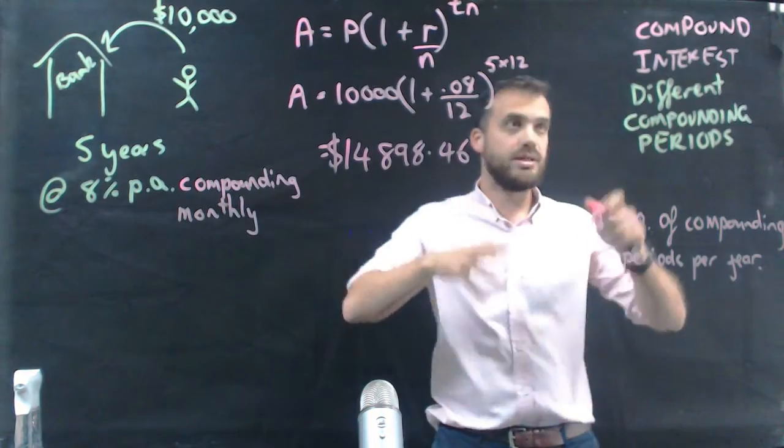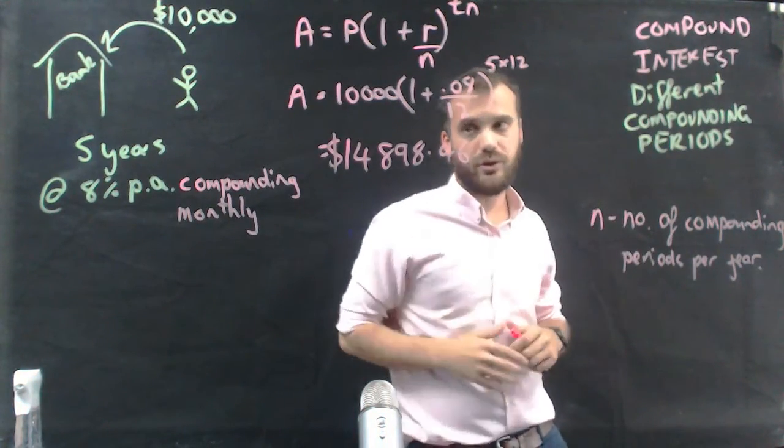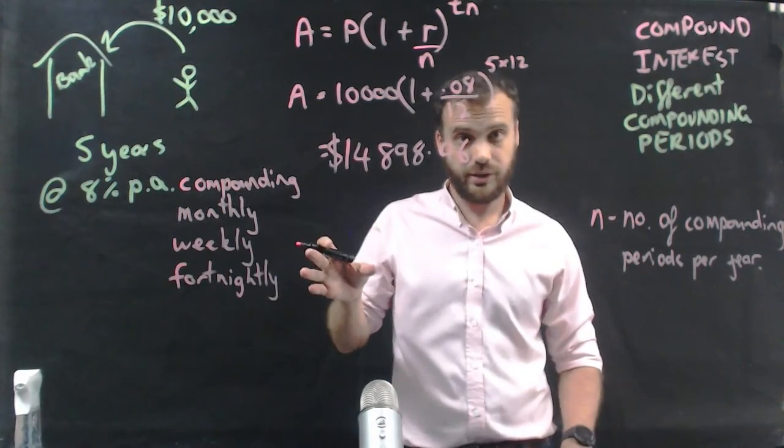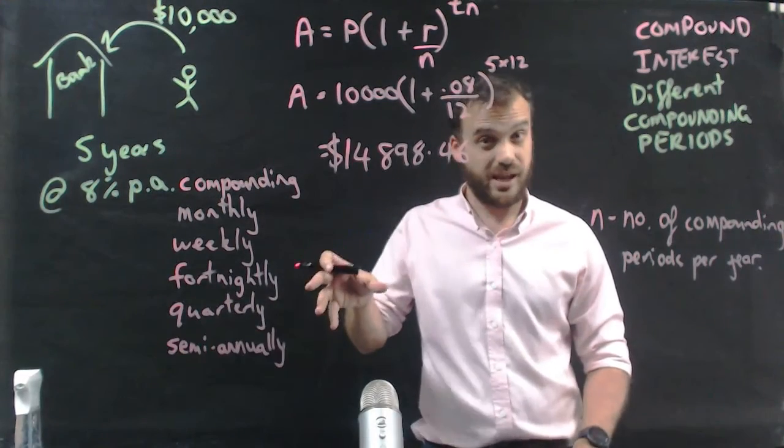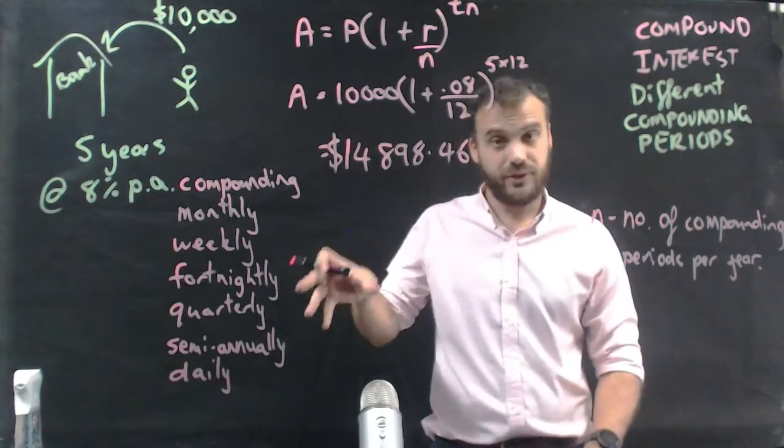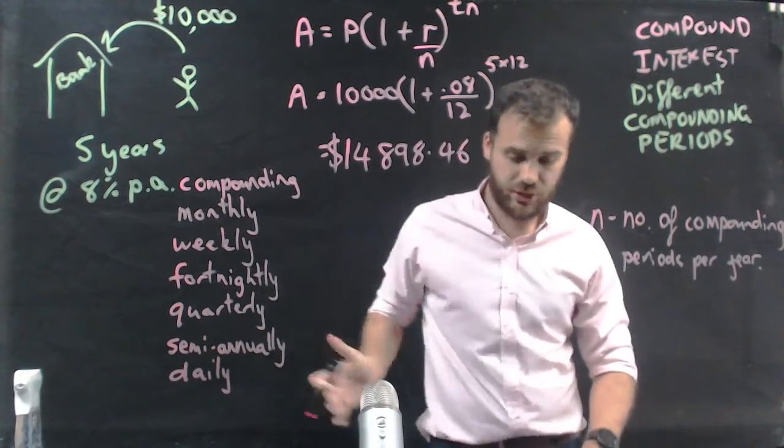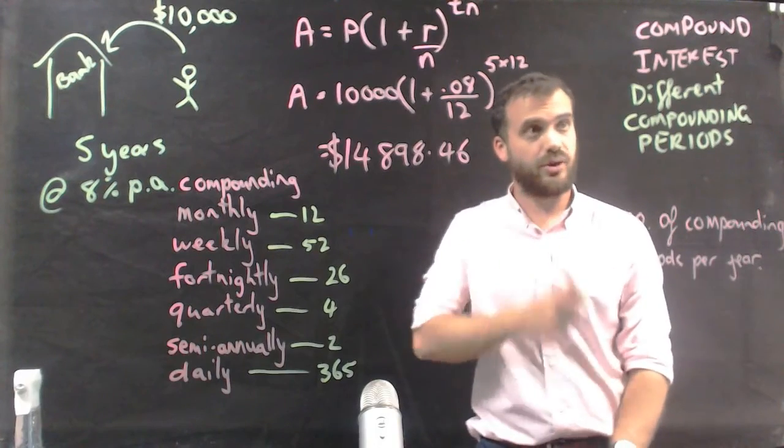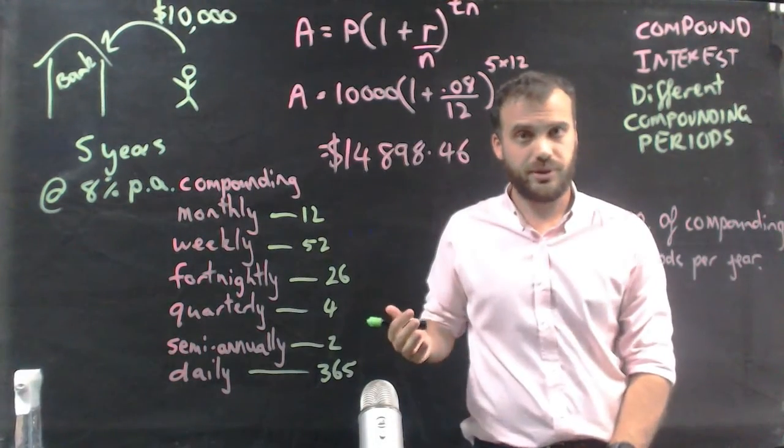So this is compound interest with different compounding periods. It could be monthly, weekly, fortnightly, quarterly, semi-annually twice a year, or even daily. The N values for each of these correspond to the number of periods per year. That's compound interest with different compounding periods.